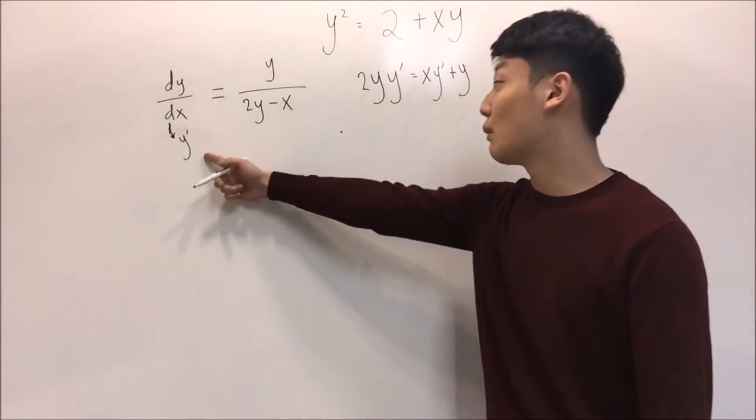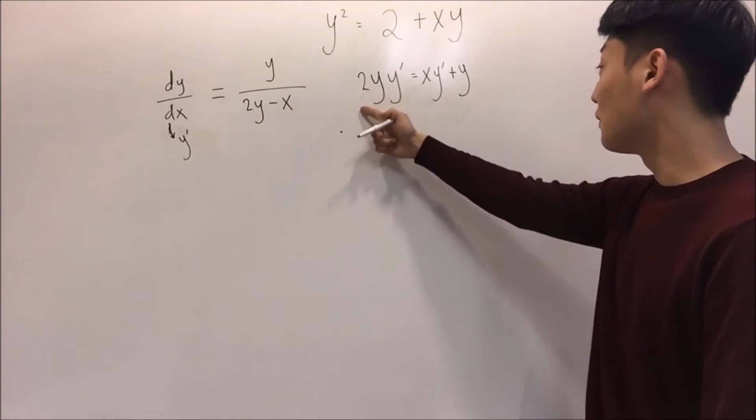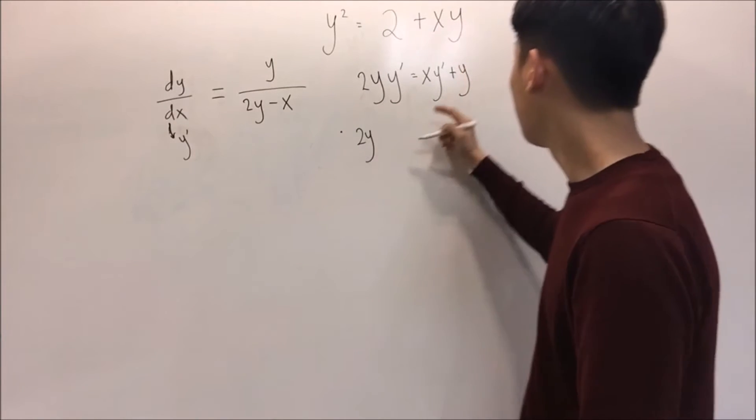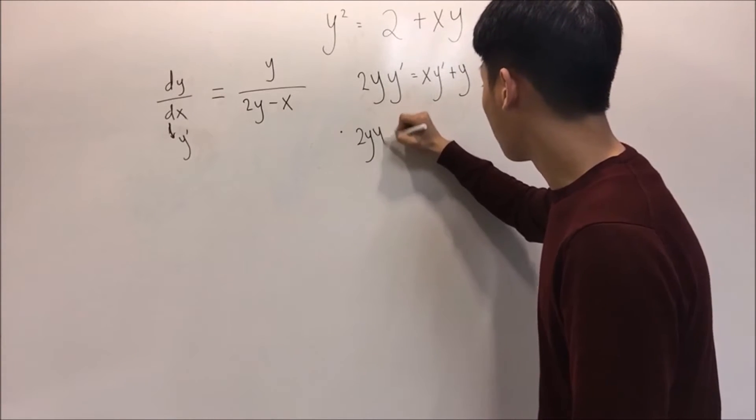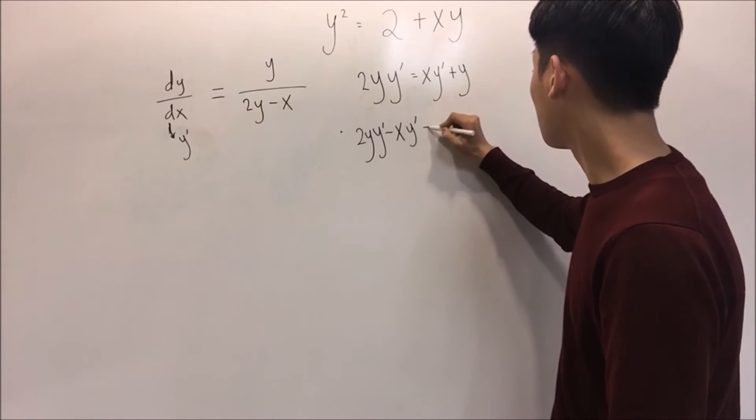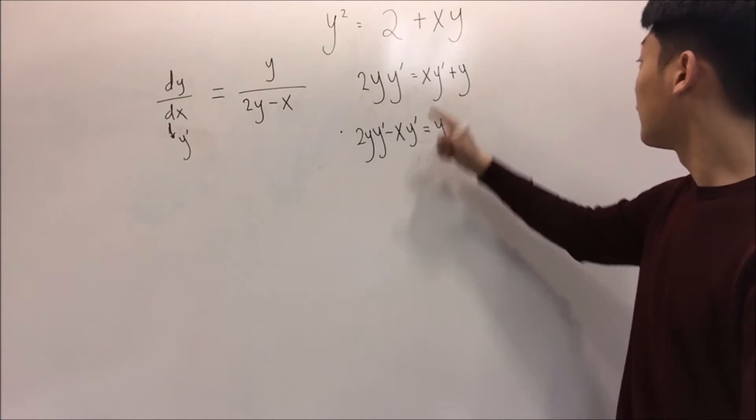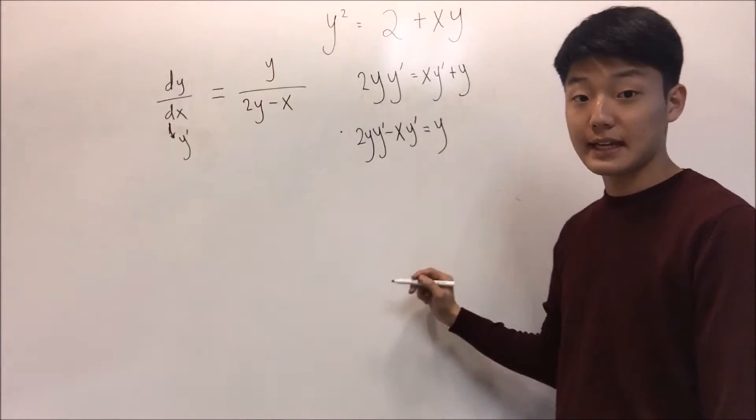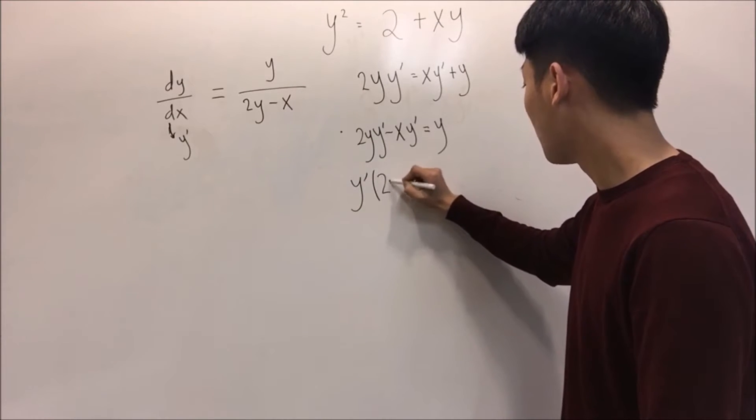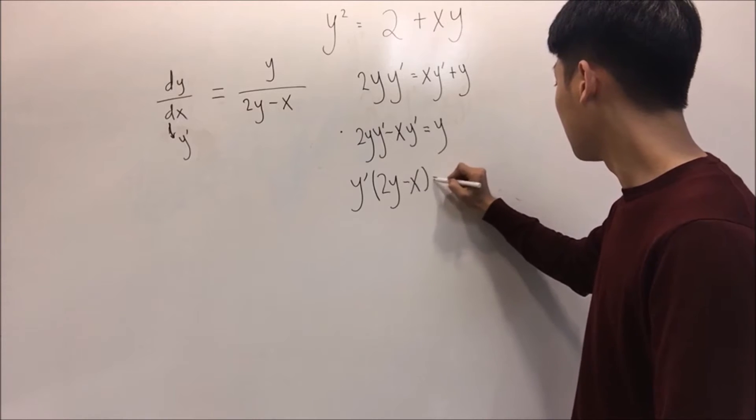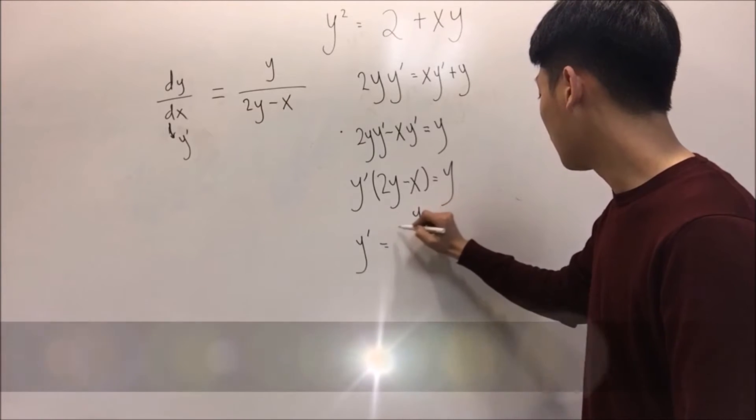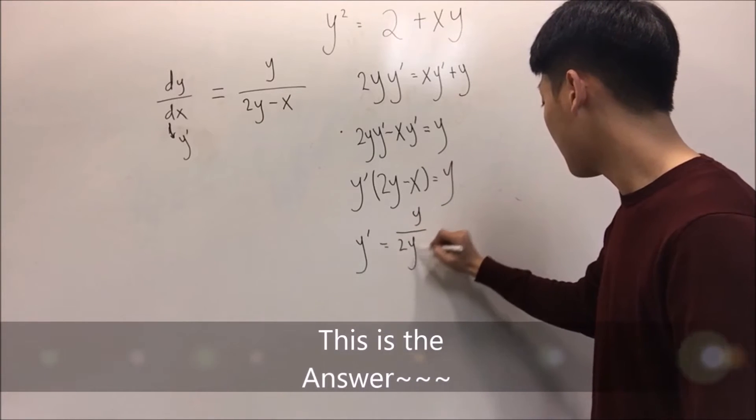Because we're solving for dy/dx, we have to put y prime to left side and other variables to right side. So 2y y prime minus x y prime equals y. The next step is factor it out by y prime. This will become 2y minus x times y prime. And lastly, y prime equals y over 2y minus x.